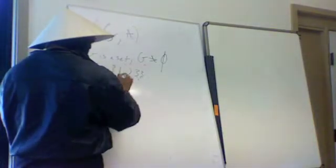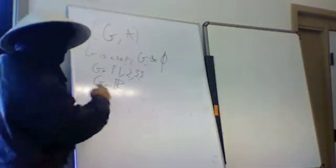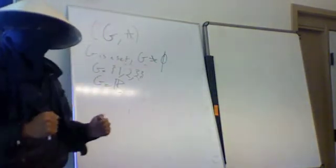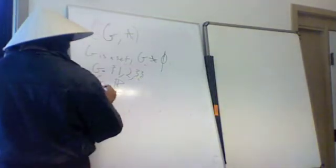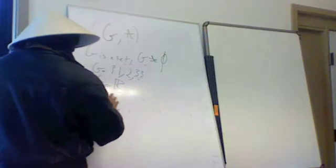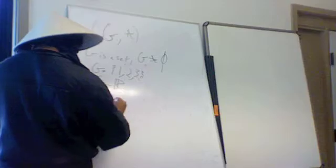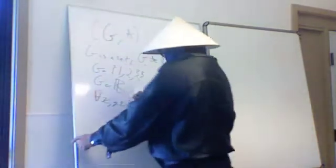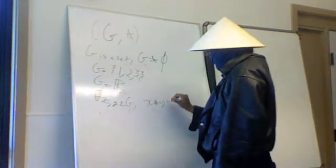For example, G equals the real numbers — that's a set. G is a set, and ★ is a binary operator, which means you take two elements and the result is still in the same set. It takes two elements from G and spits out an element in G. So for any x, y in G, x ★ y is in G.